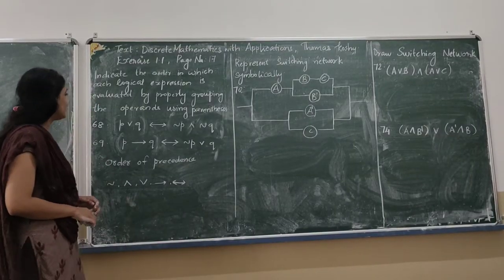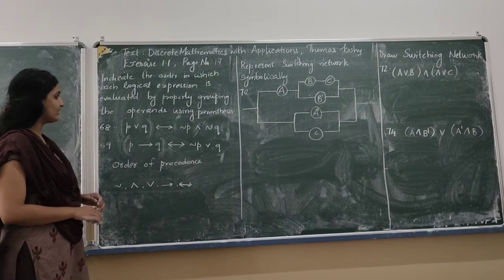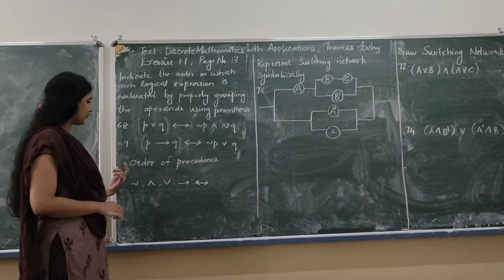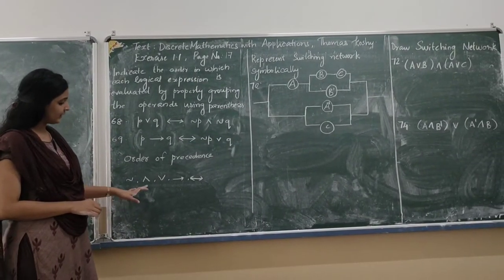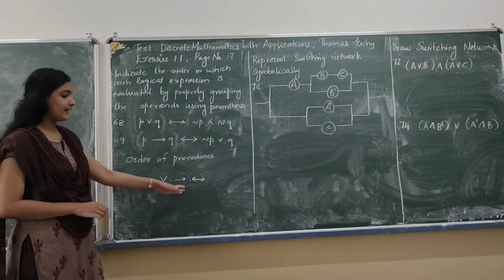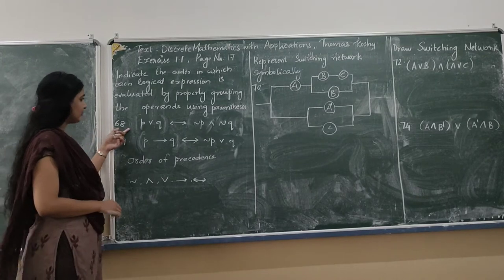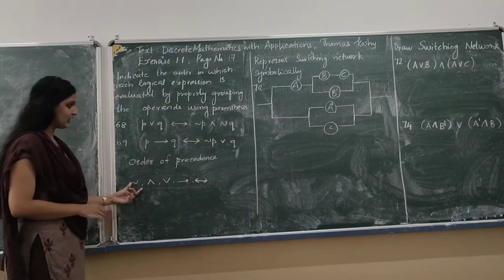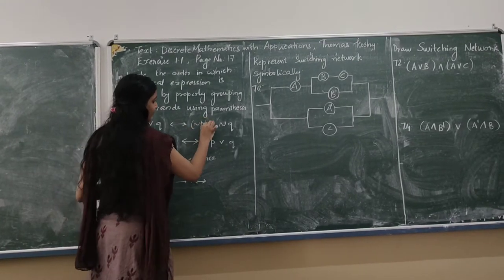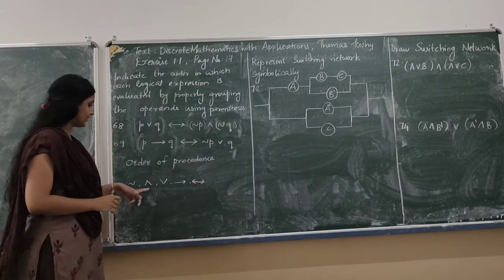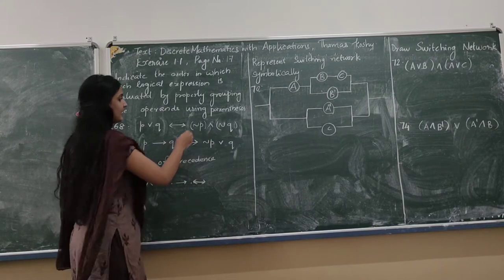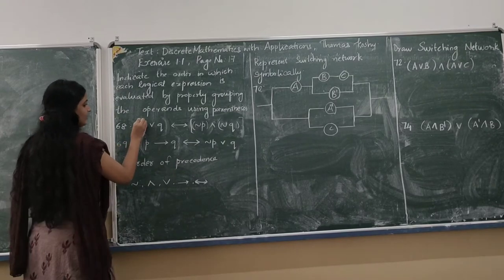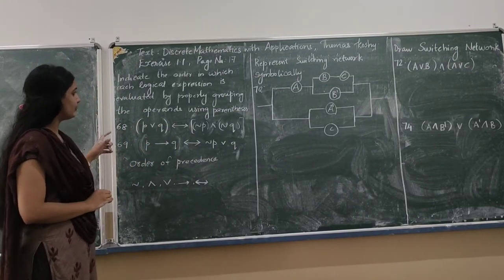The next question is: indicate the order in which each logical expression is evaluated by properly grouping the operands using parentheses. The order of precedence is: negation first, then and, then or, then implies, and lastly biconditional. In the first question, P or Q biconditional negation V and negation V — we first group the negations, then the and operator, then the or operator.